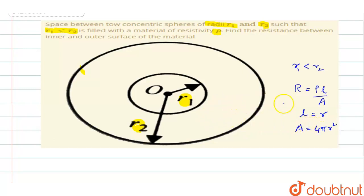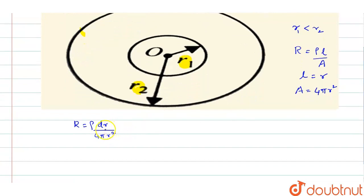So these two we will substitute back in this equation. So that you get R equation as rho, we will write it as it is. The length we shall write the small change as dr, divided by the area is 4 pi R squared. This is the resistance in the case of the small element dr.